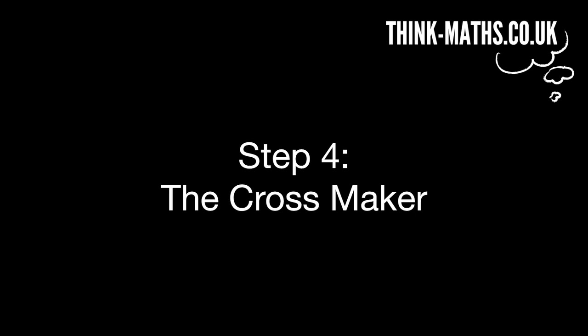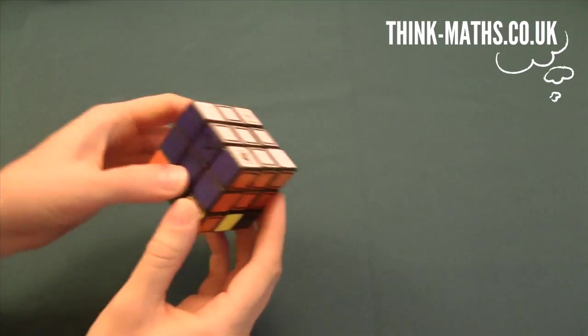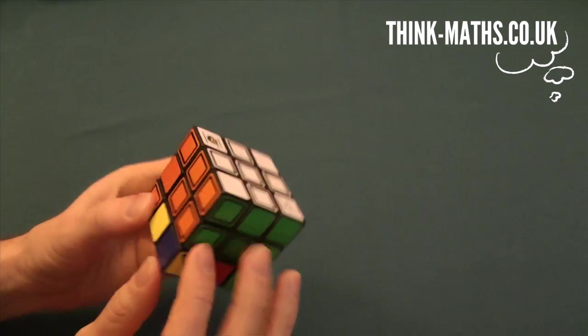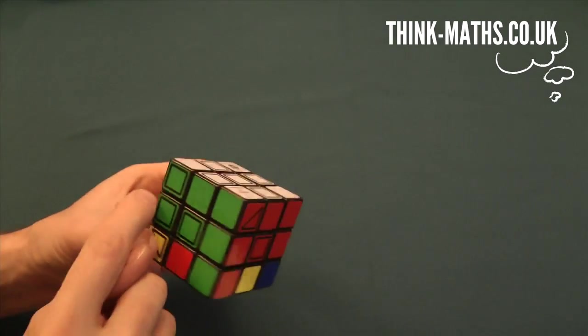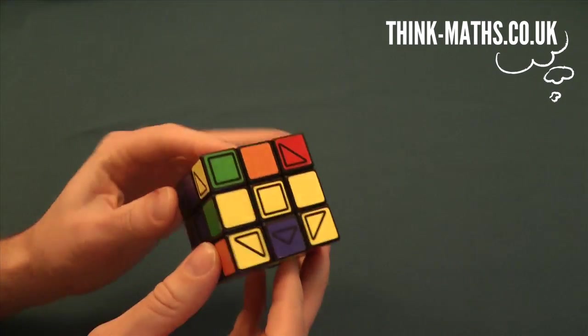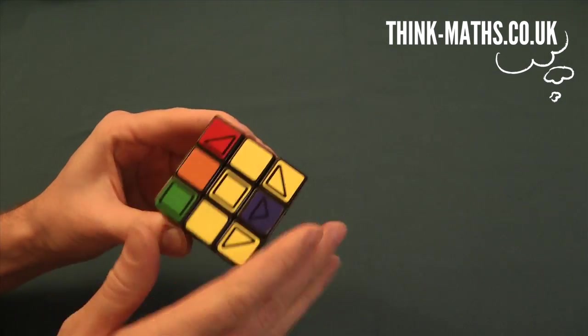Step 4, The Cross Maker. Okay, so now your cube is almost done - you've done 2 thirds I guess. The top layer is all correct, the middle layer is all correct, and all you need to do now is fix this last yellow face.